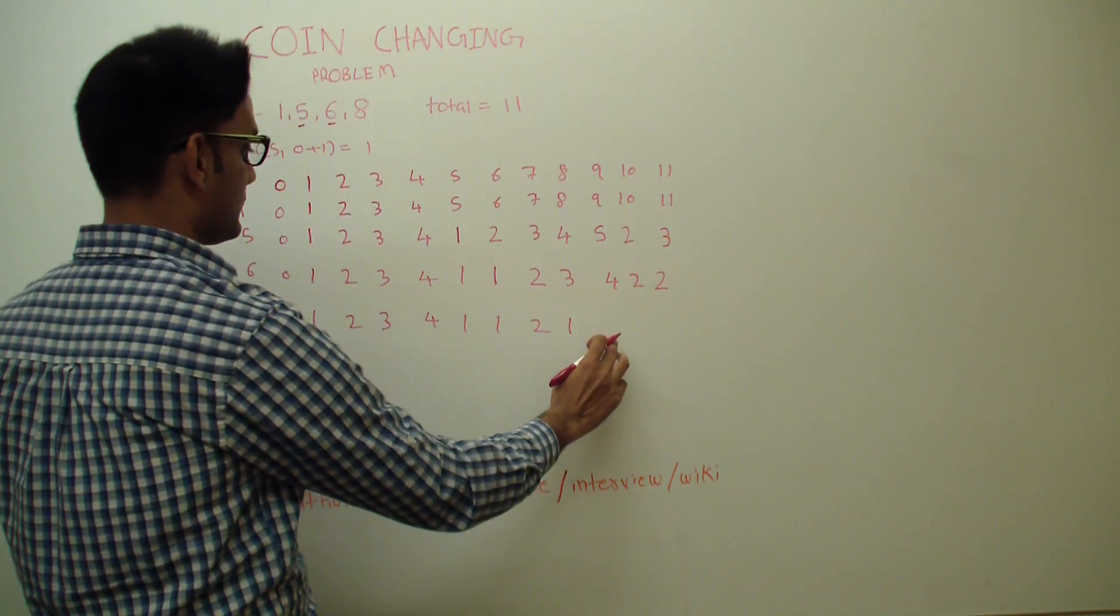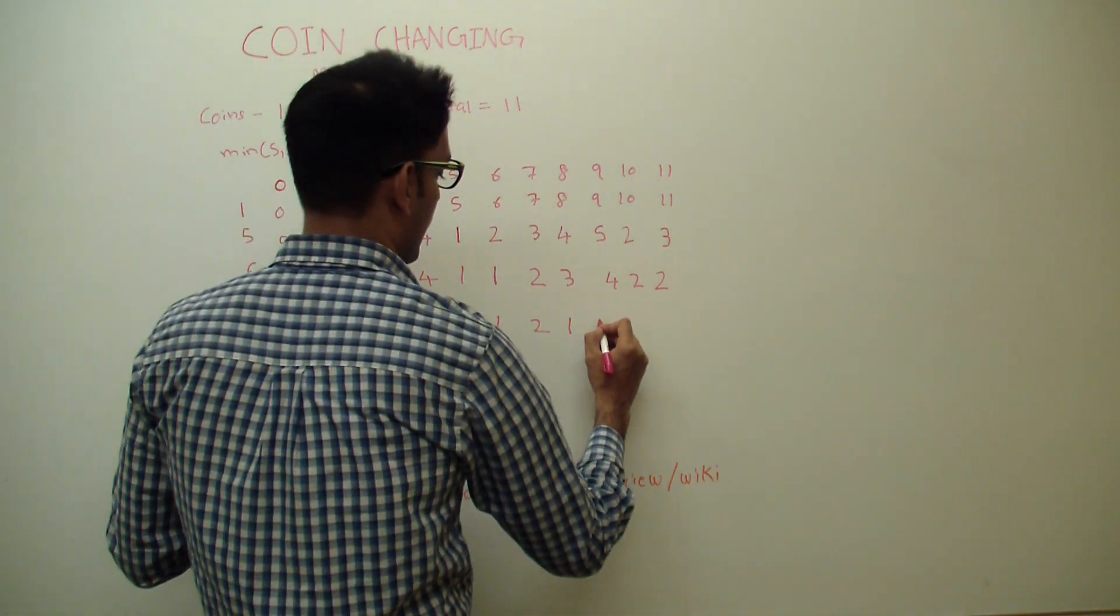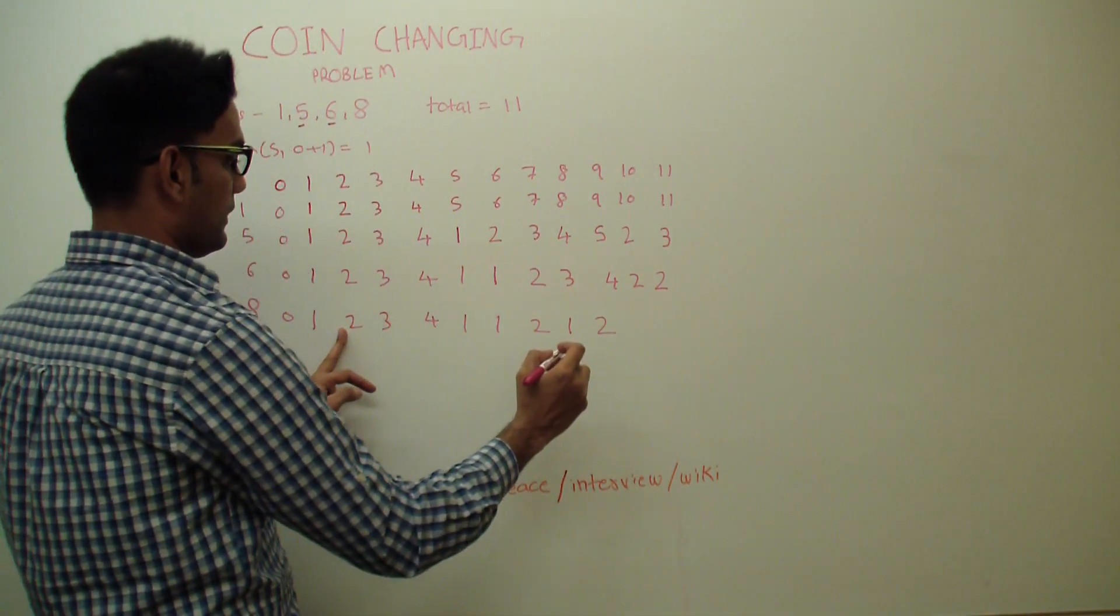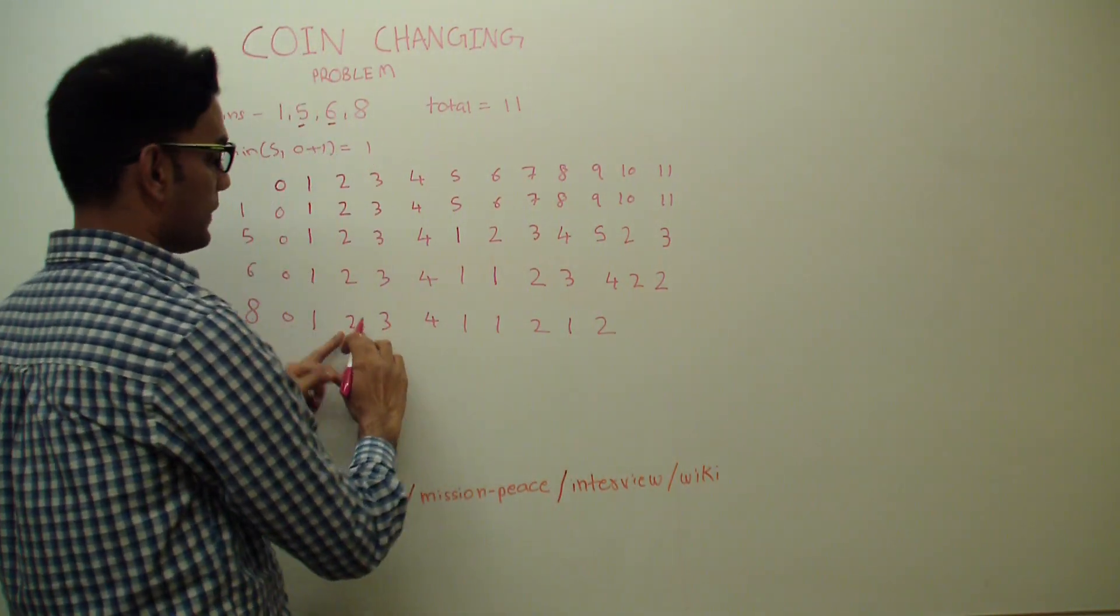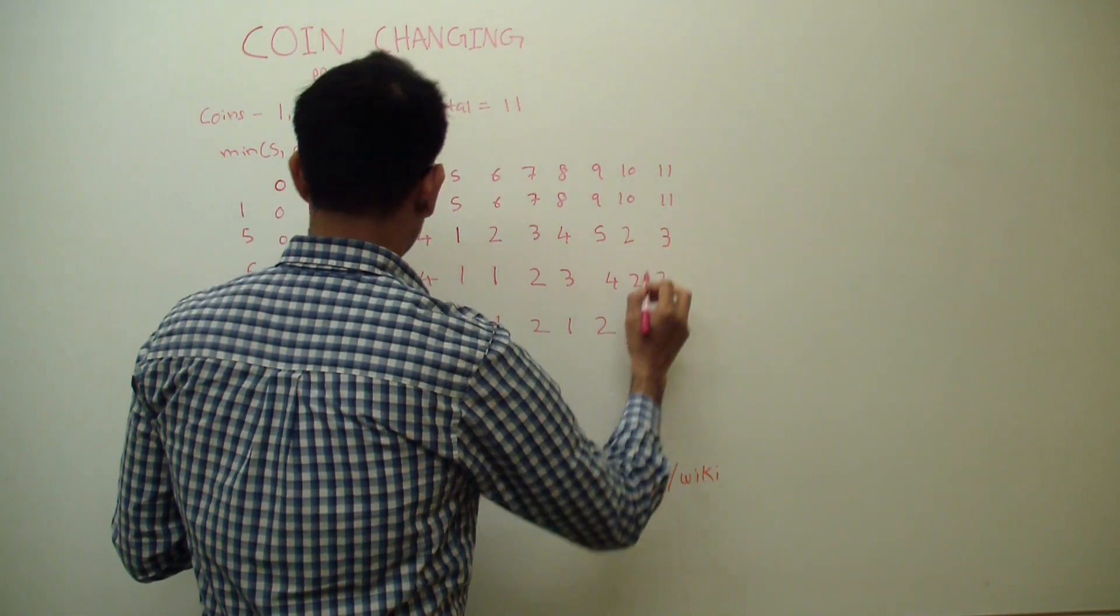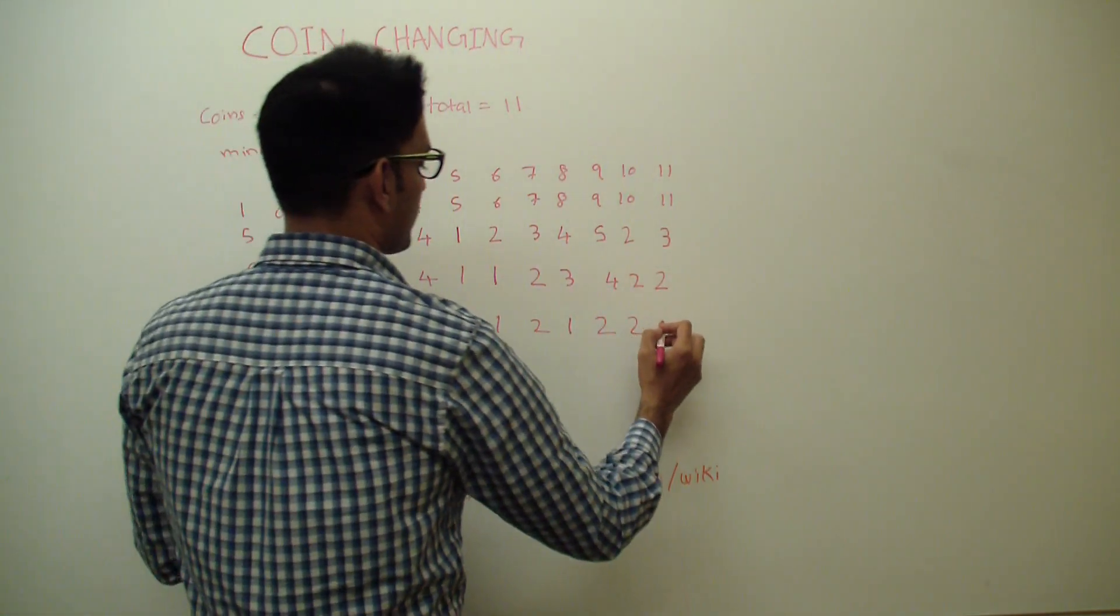For 9, we'll say 2 because we come back 8 steps, so 0 plus 1, so 2. For 10 we'll say 3 so 2 plus 1, 3, or the guy from the top so we'll use the guy from the top, 2. And for 11 we'll either say 4 or the guy from the top 2, so 2.